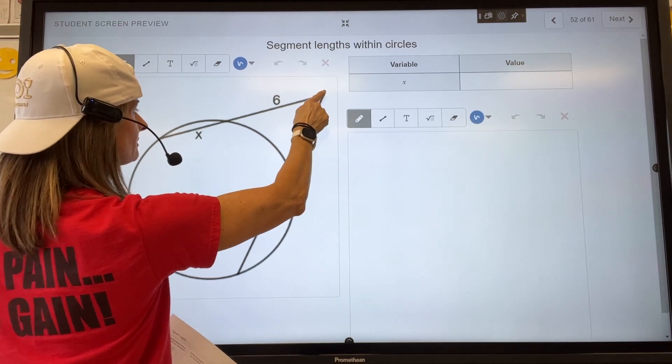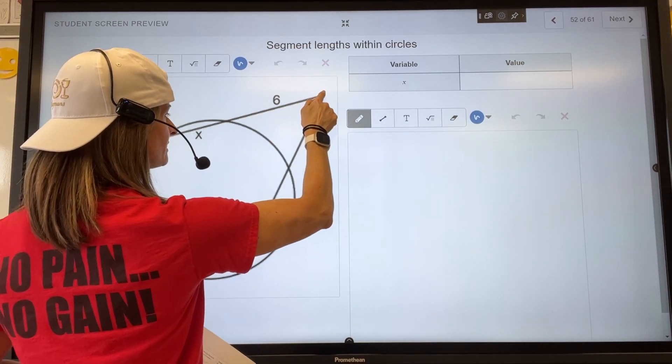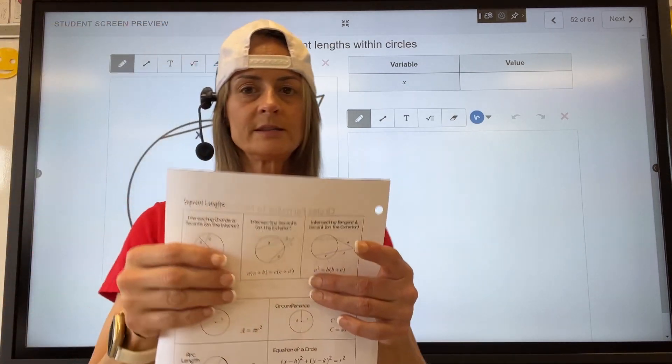We have a secant line here, see how it hits the circle once, twice. Secant line here, it hits the circle once, twice. The formula is right in the center at the top.